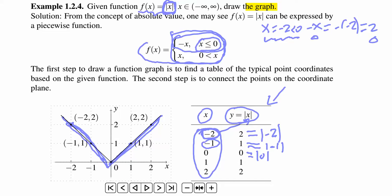For the second piece, that's easier. Because if x is greater than 0, then x is positive. Since x is positive, then absolute value of x is just x for this piece.